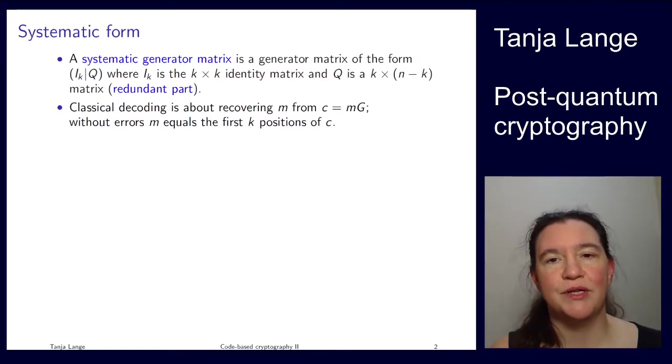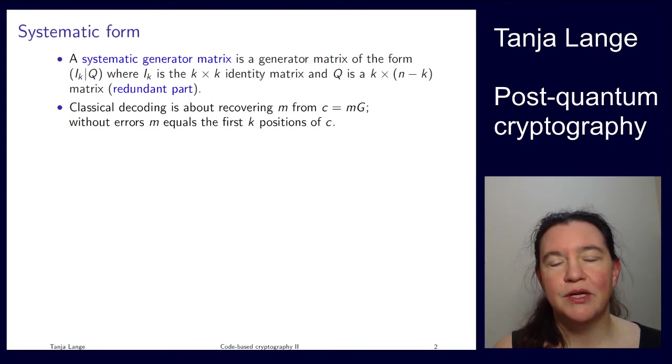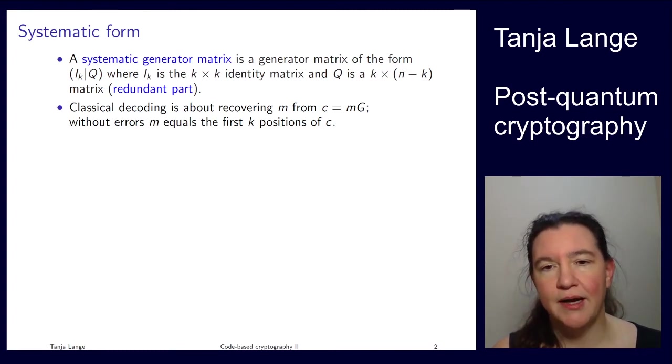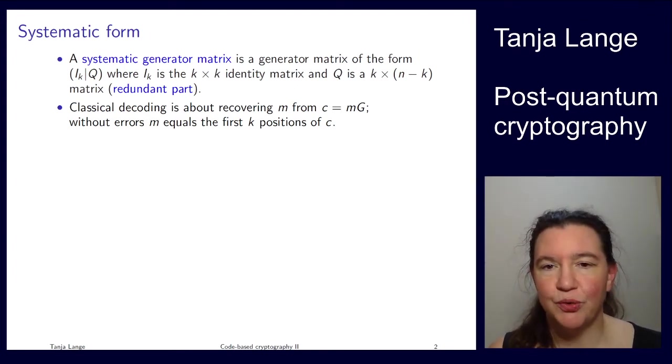So, this is the second part of the code-based cryptography lecture. We have already seen the McEliece cryptosystem and we are now going to look into another system due to Harald Niederreiter and also look into what goes wrong with the schoolbook versions that I am showing you here. We need a little bit more of the theory, so I am going to jump into some more notions from coding theory.